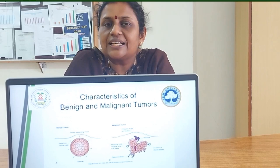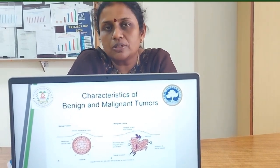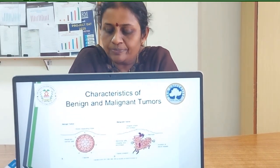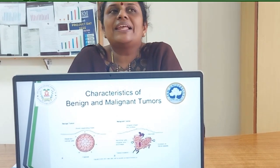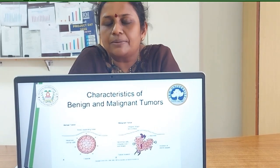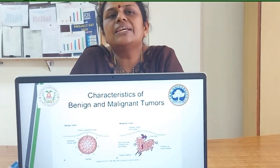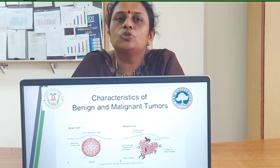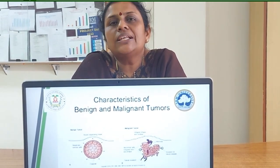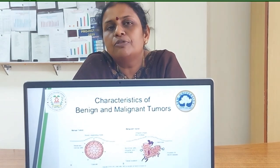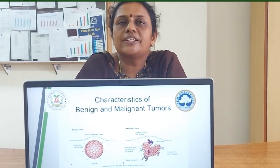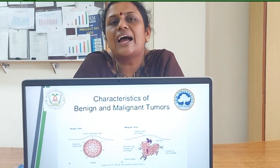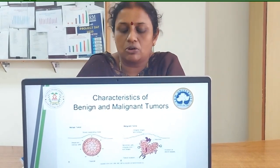Generally, tumours classified as benign carry comparatively good prognosis, rather than malignant tumours which carry very poor prognosis. The features between benign and malignant are distinguished under four important fundamental characteristic features: namely, the degree of differentiation and anaplasia, the rate of growth of the tumour, the local invasion of the tumour, and metastasis or the spread of the tumour. These are the four basic features on which we differentiate whether the tumour belongs to the benign or malignant category.